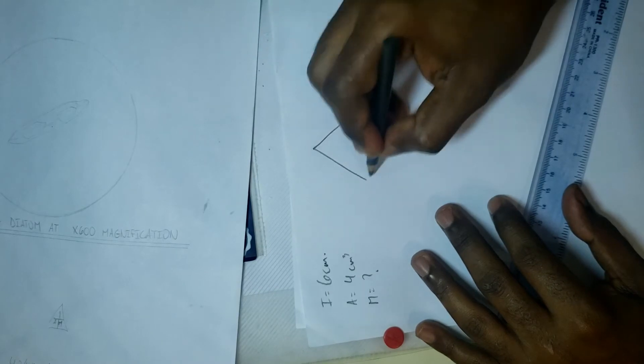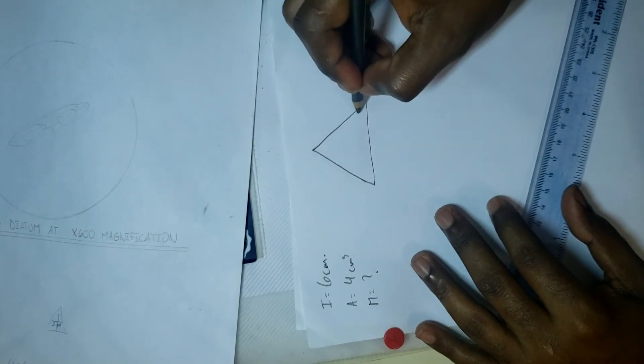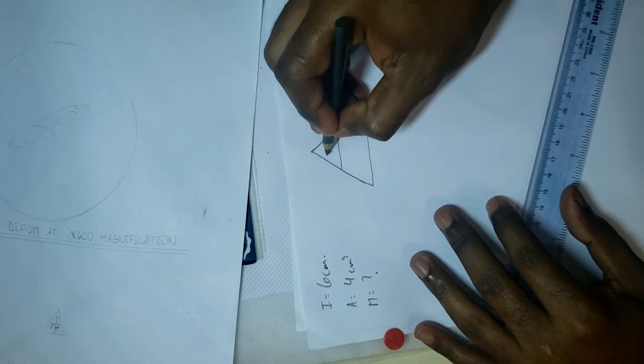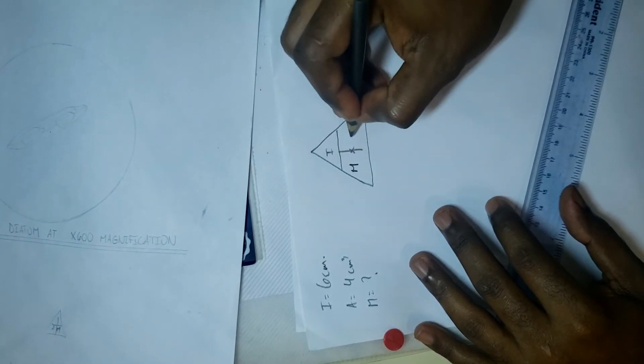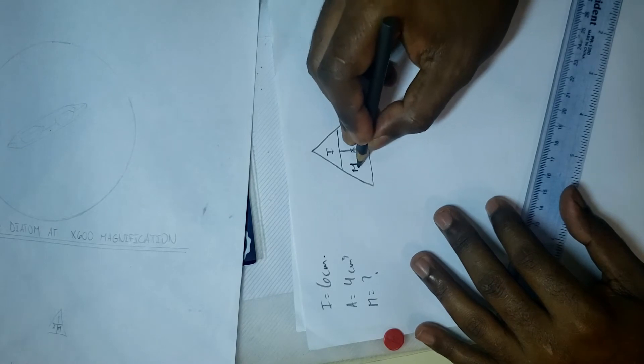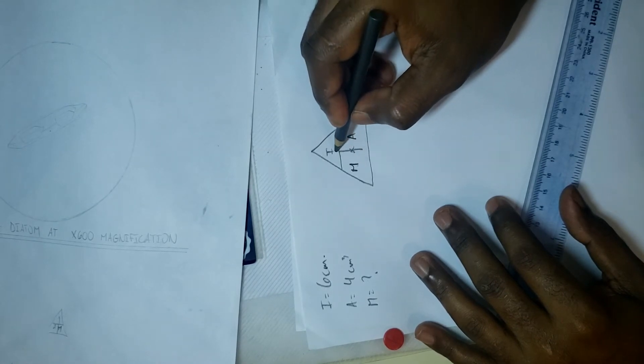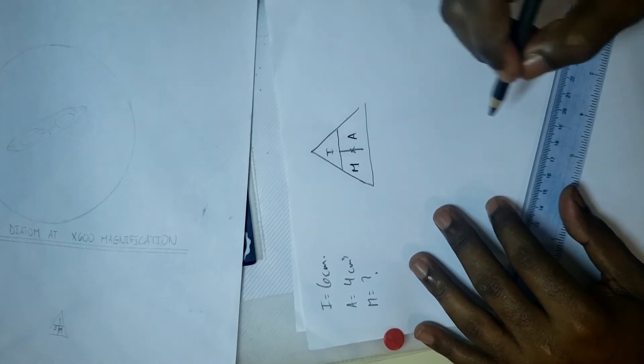Now we're trying to find M, which is our magnification. Easy way to always remember to convert between the three is to draw your triangle. Image equals magnification times actual. This time we want magnification, so it's going to be the image divided by the actual.